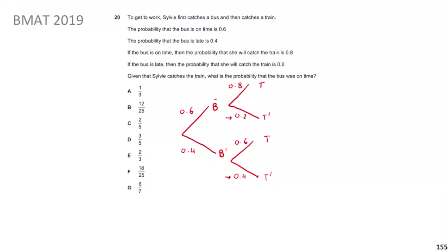The question asks: given that Sylvie catches the train, what is the probability the bus was on time? This is a conditional probability question. The general formula is: P(A given B) = P(A and B) / P(B). Here that means P(bus on time | catches train) = P(bus on time AND catches train) / P(catches train).